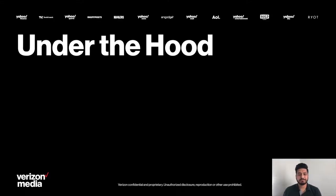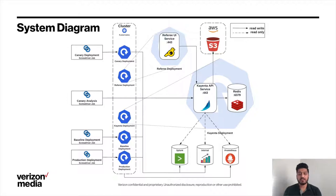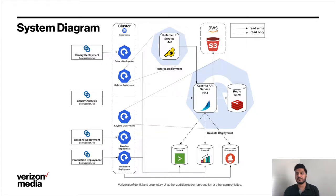Here's the money slide — this is how we have Kayenta set up. We have a Kubernetes deployment of the Kayenta service with Redis running in the container as an LRU cache. Kayenta uses Redis to store intermediate results during an execution; you can run Redis as a sidecar too. The canary configs and execution results are archived in an AWS S3 bucket. A Kubernetes deployment of Referee is also set up to provide a UI to analyze the canary analysis results. The Screwdriver jobs go top to bottom: first the canary deployment, followed by the canary analysis job, which orchestrates creation of the canary config and execution of canary analysis with Kayenta. Metrics from canary, baseline, and production deployments are stored in various metric stores like Splunk, Prometheus, and an internal metric store.